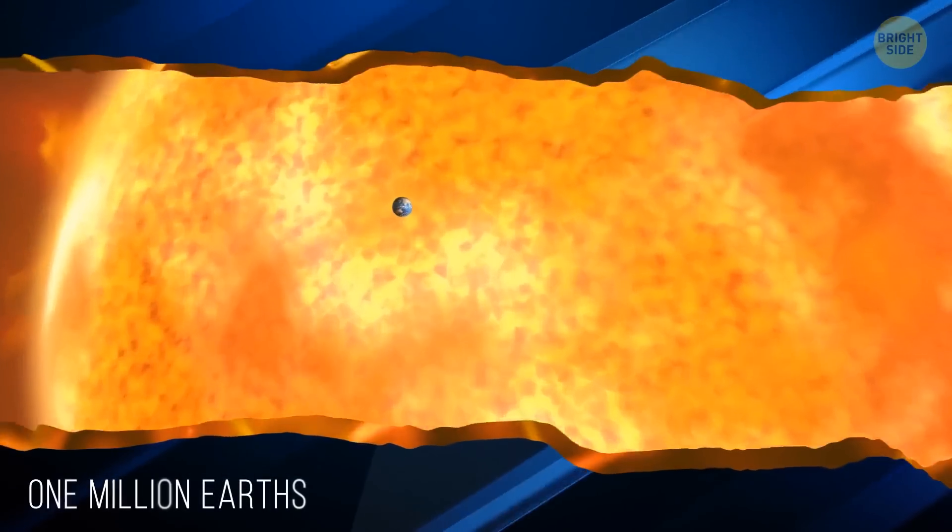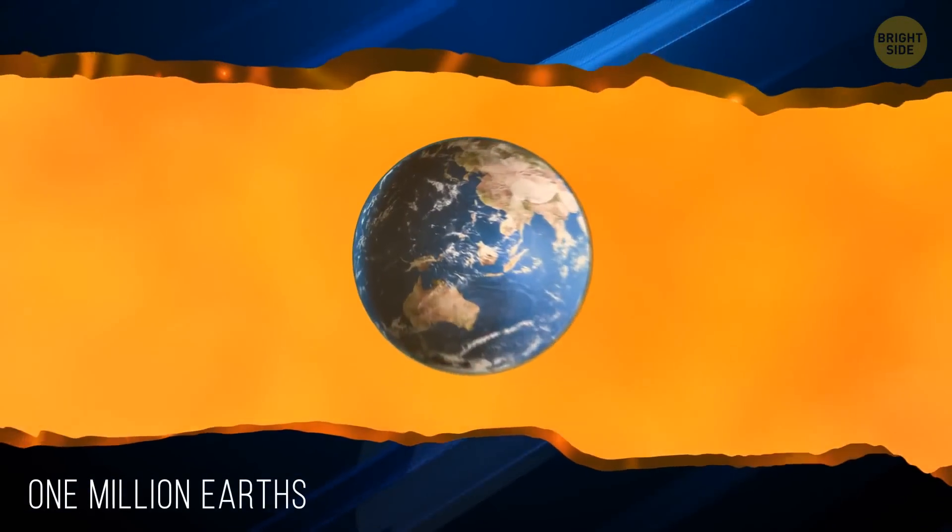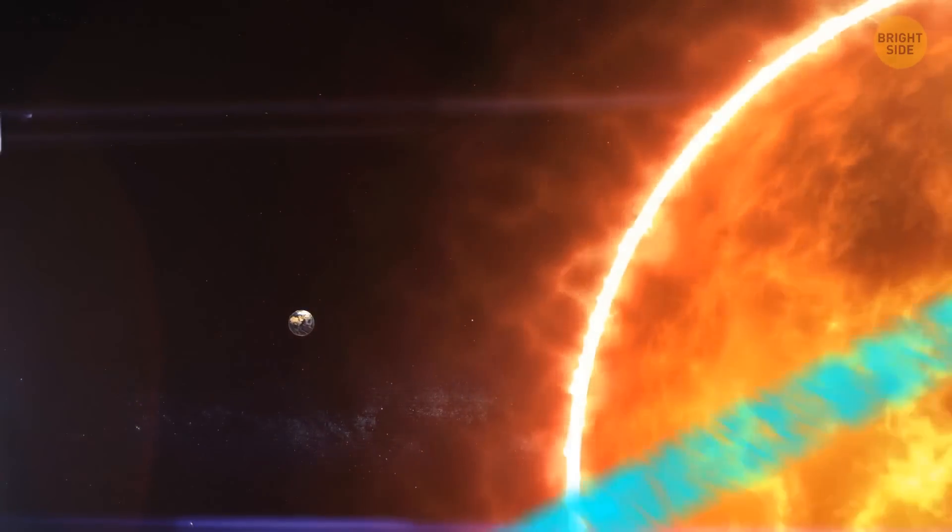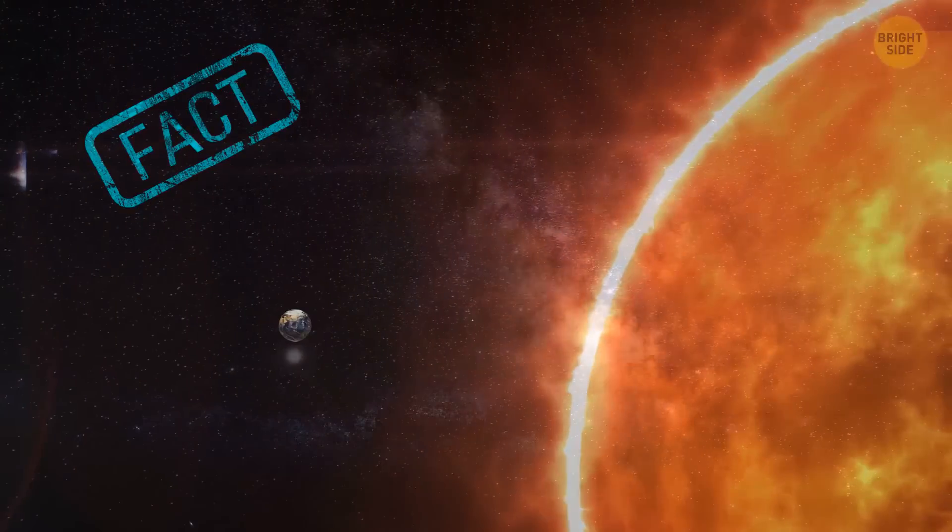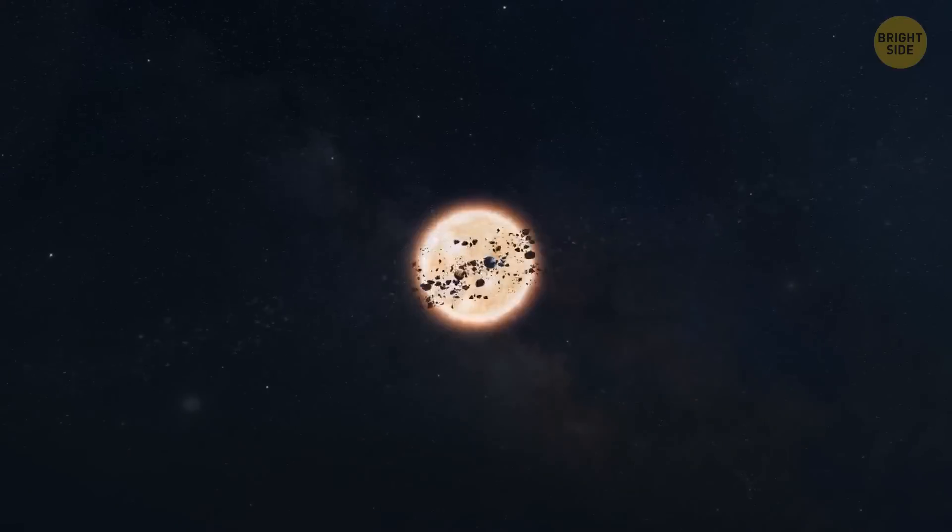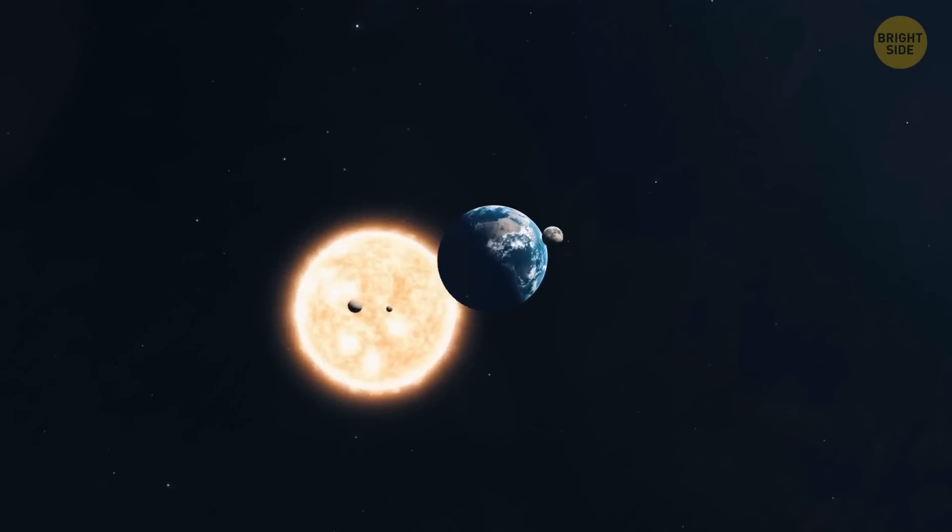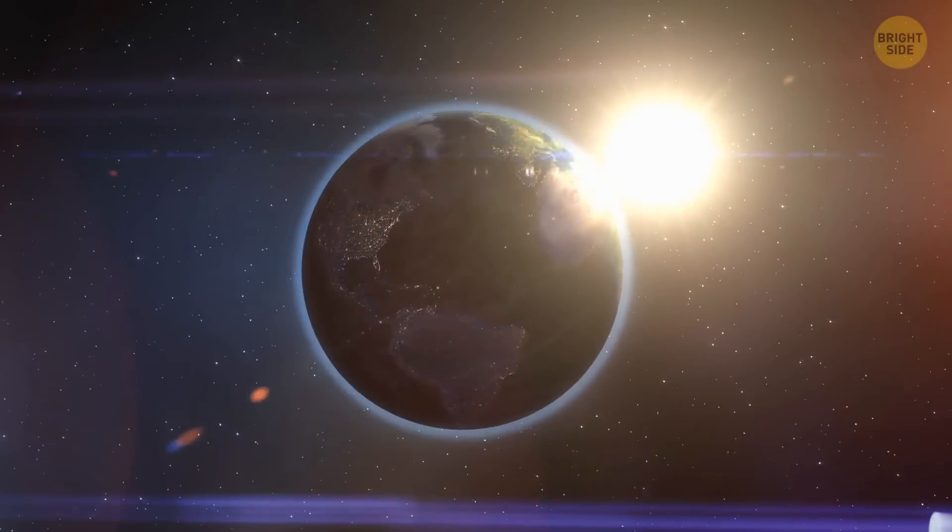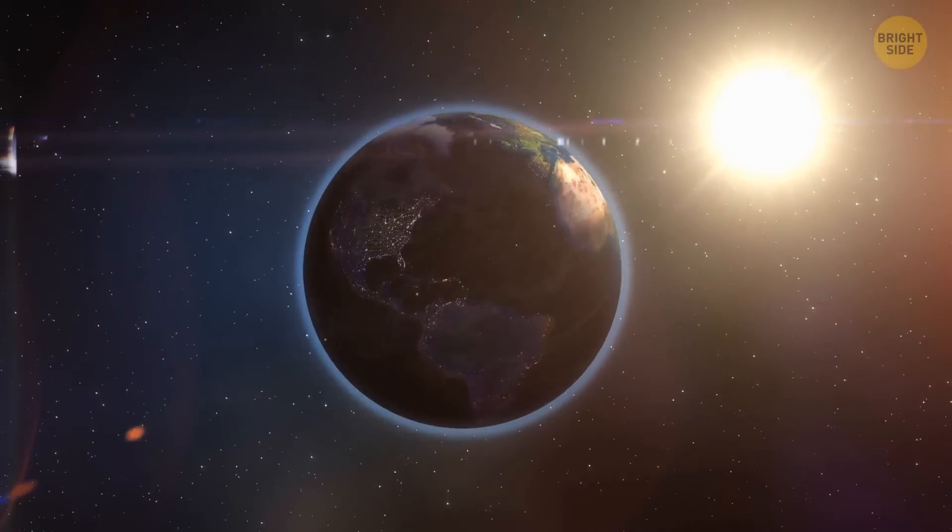One million Earths can fit inside the sun. Do you think this is a myth or a fact? This is a fact. Although the sun is one of more than 100 billion stars in the Milky Way, which is at the heart of our solar system, it can fit one million Earths. Yeah, it looks small when we see it from here. But it's only because it's so far away from Earth.